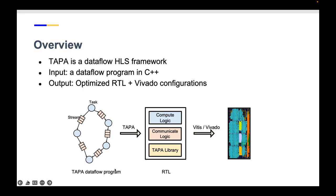The input is a dataflow program in C++, and the output is an optimized RTL corresponding to the C++ code, along with some configurations that help the RTL be placed well. In a dataflow program, users define parallel tasks and streams—essentially FIFOs—that allow tasks to communicate. TAPA compiles this into RTL, which is sent to Vitis or Vivado to generate the final bitstream that runs on the actual FPGA.